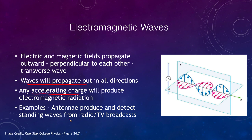Antennae produce standing waves from radio and TV broadcasts. You can broadcast a standing wave through a wire — something a bit more complicated than a simple straight wire — and send that signal out. Another antenna is then able to detect that signal and decode it into a radio or TV broadcast.